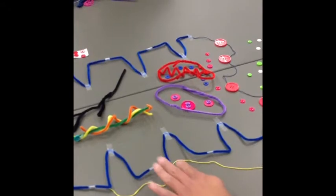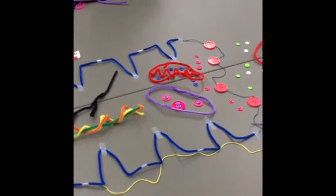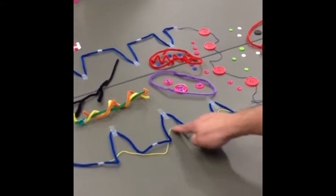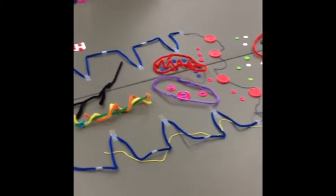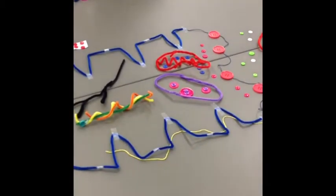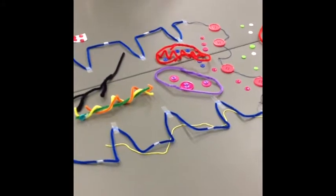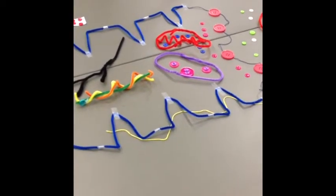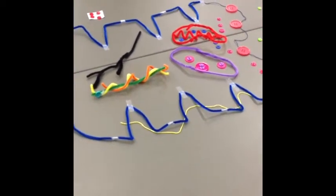The action potential travels down the sarcolemma into T-tubules. These are tubes that dip down into the cell and are made up of cell membrane. T-tubules are represented by sarcolemma, the blue pipe cleaner, that penetrate down into the skeletal muscle cell.